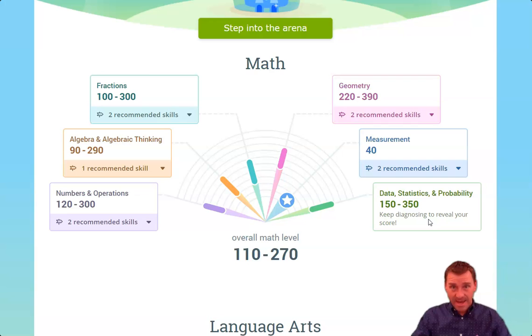But again, as they keep going, it keeps giving them more. And at some point, there's going to be a red flag or maybe two or maybe three, four or more red flags that pop up. And that's where the recommended skills come from.